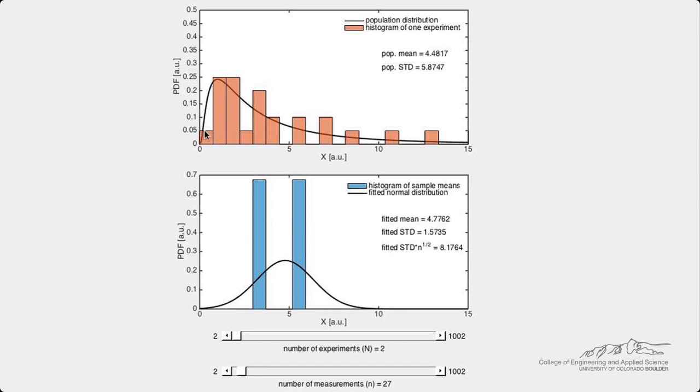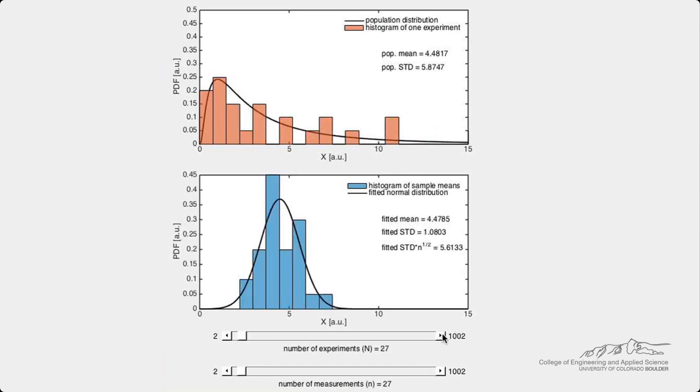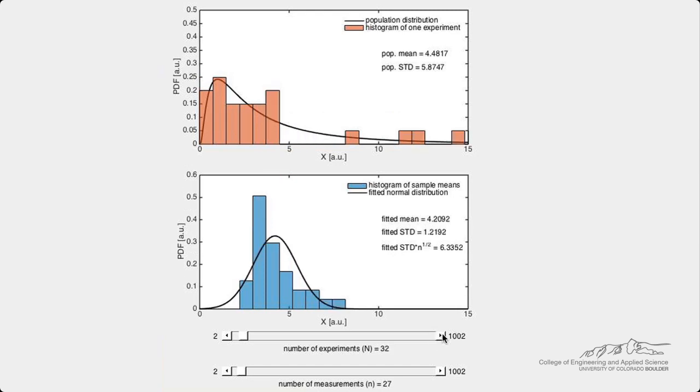Now let's take the average of these 27 measurements from this experiment and plot the mean in the lower plot. If we increase the number of experiments but keep the number of measurements in each of these experiments the same, we can generate a histogram of the means of the measurements from each experiment shown in blue in the lower plot.